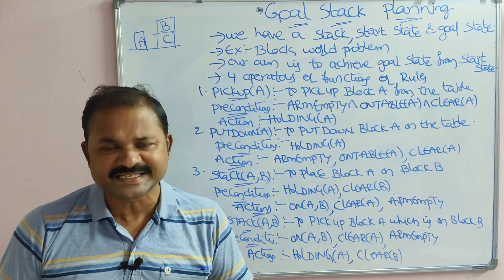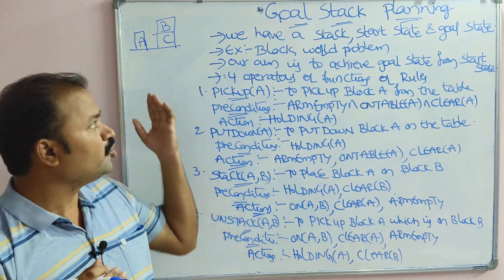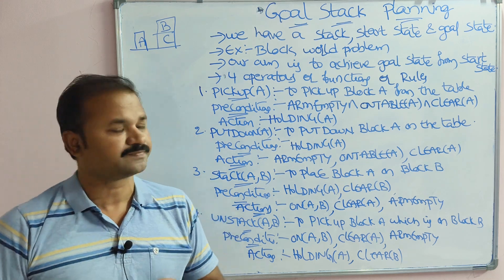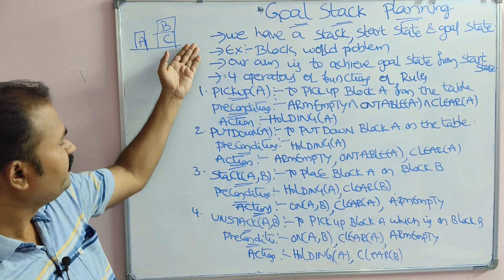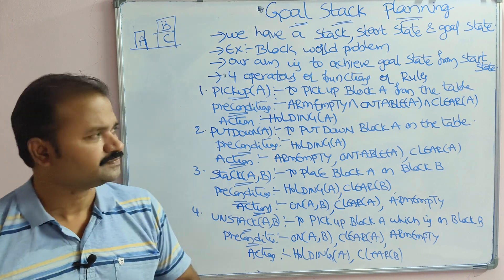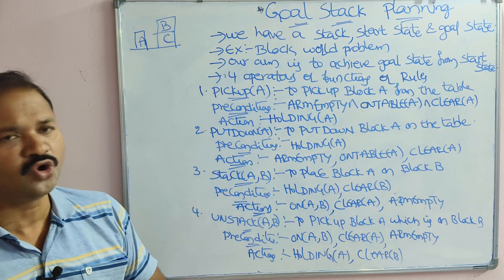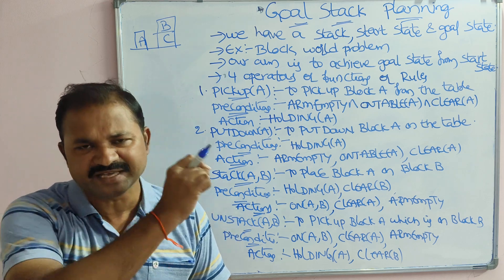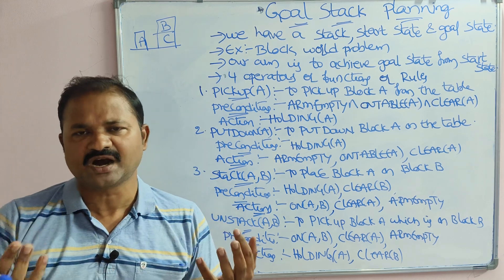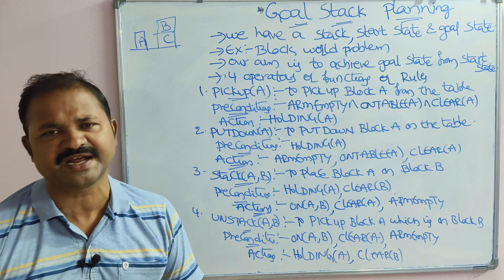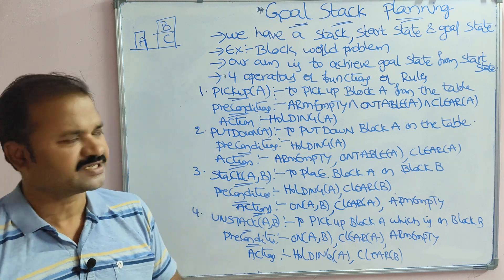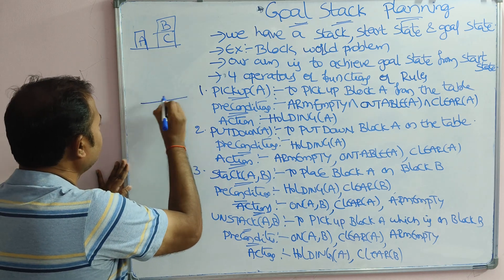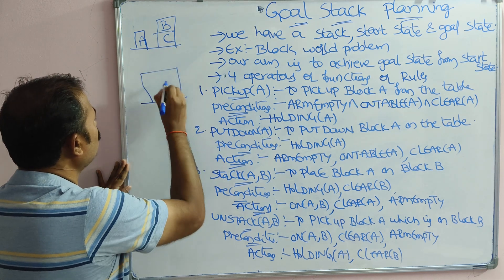Let us discuss goal stack planning in artificial intelligence. We have a stack, a start state, and a goal state. Goal stack planning means we will have a stack — we know that on a stack we can perform insertion and deletion operations.